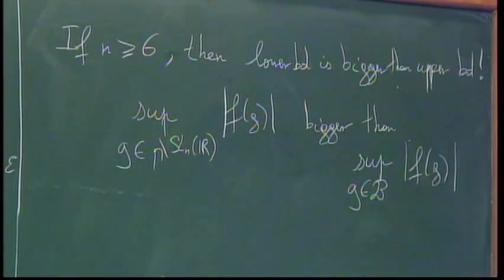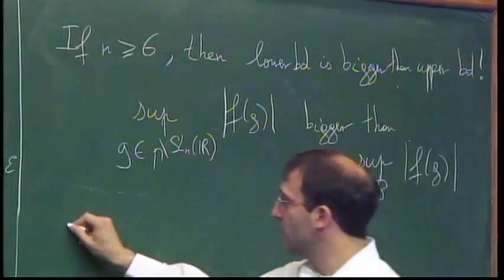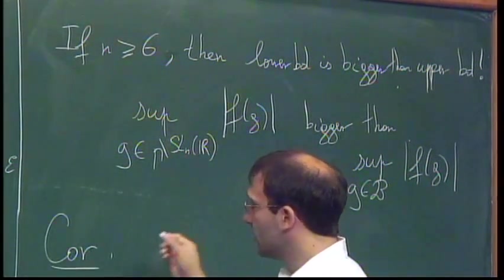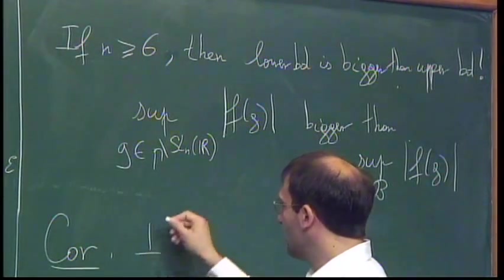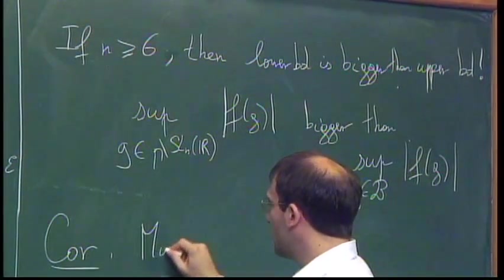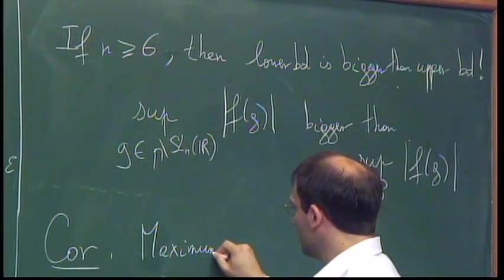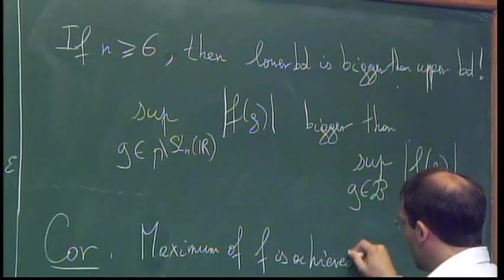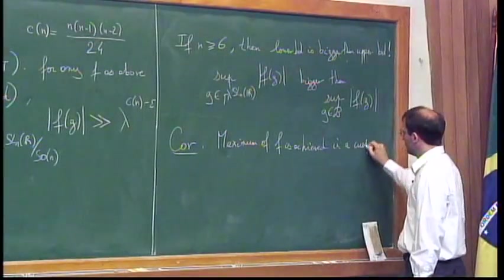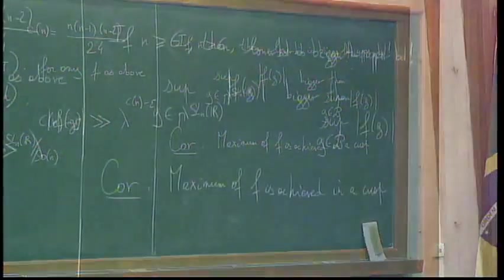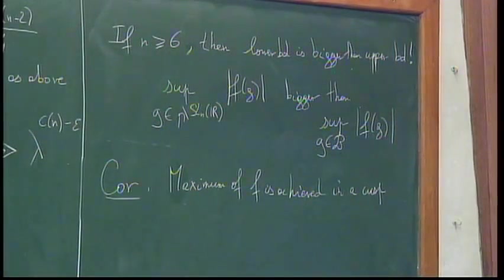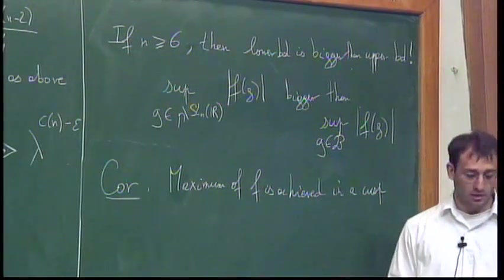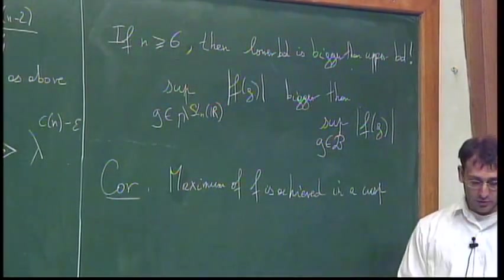So we can choose B to be any bounded subset. So corollary, what it means, informally, is that maximum of F is achieved in a cusp. It cannot be... If it's large, it has to be large in the cusp because it's bigger than on any bounded set. It's kind of a qualitative consequence of this result.